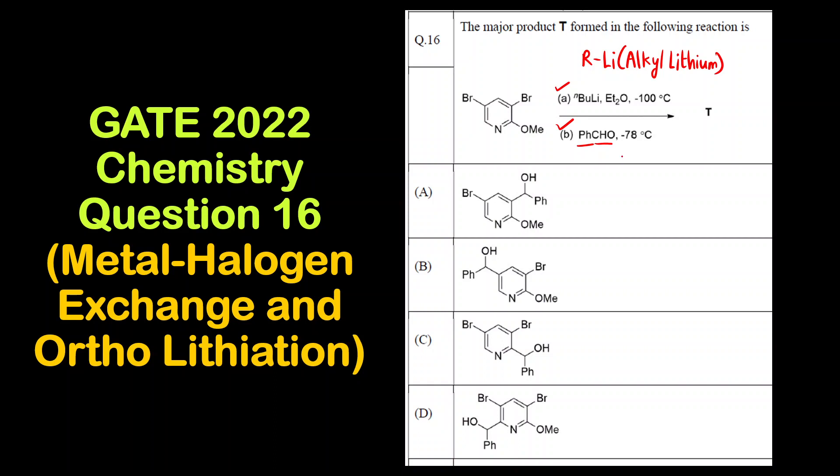Benzaldehyde is PhCHO. The question is which Br group will attack. So how does ortholithiation take place? Suppose there is some group - let's say there is this lithium group. The condition is that next to this, the carbon that is attached to the lithium group, there should be an atom, mostly it is oxygen, which should have a lone pair.